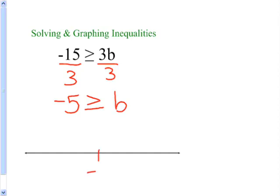So my boundary is negative 5. It's greater than or equal to, so I'm going to use the closed circle here because it could be equal to negative 5. Then I think to myself, negative 5 is greater than or equal to what numbers? Negative 5 is greater than or equal to negative 6, negative 10, negative 100, so it's greater than or equal to all the numbers to the left of negative 5.